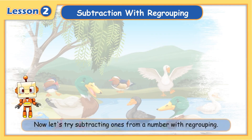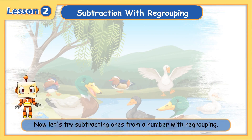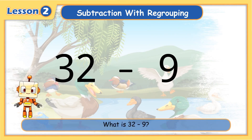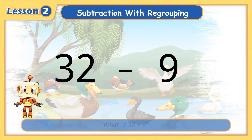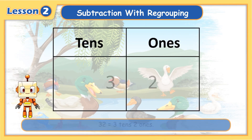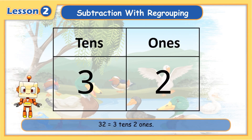Now, let's try subtracting ones from a number with regrouping. What is thirty-two minus nine? First, we break down into tens and ones. Thirty-two equals three tens, two ones.